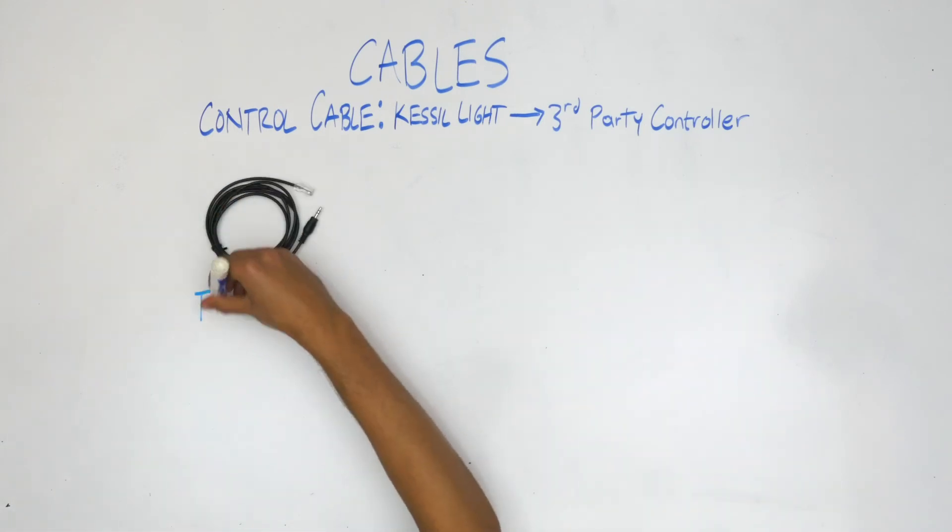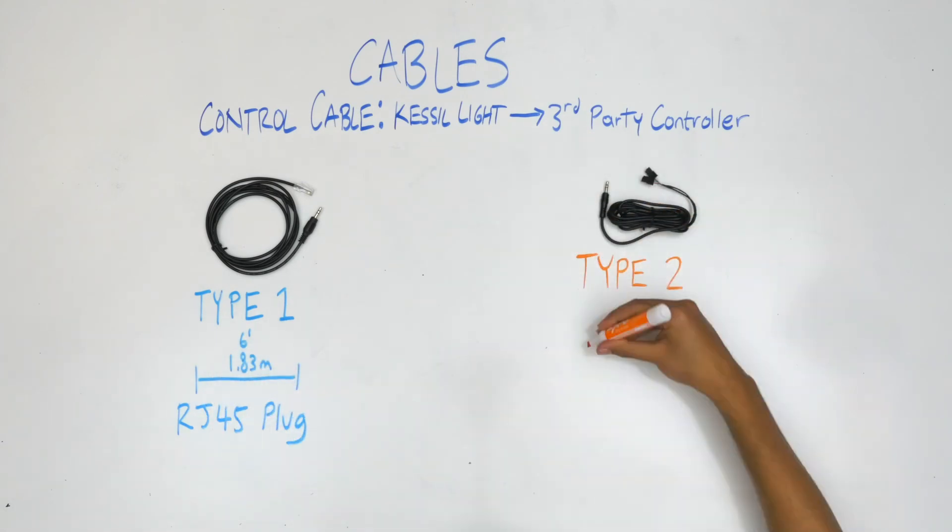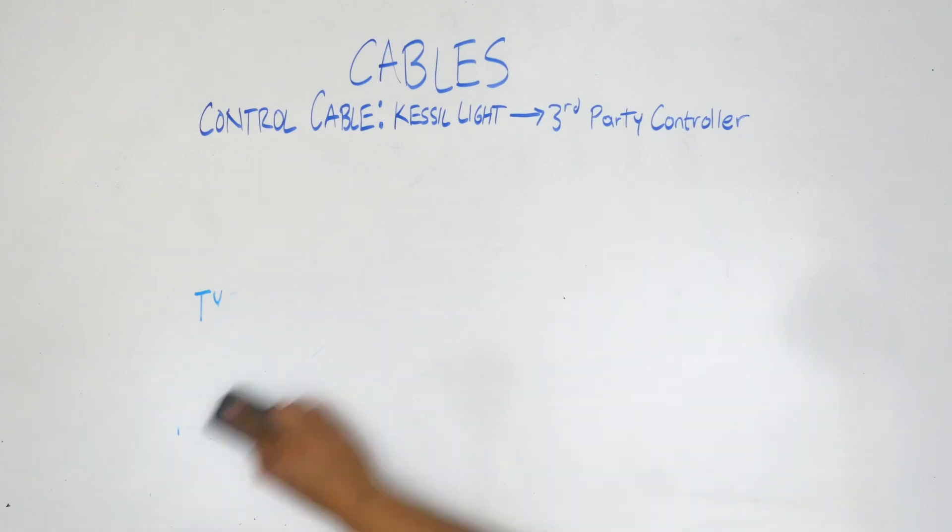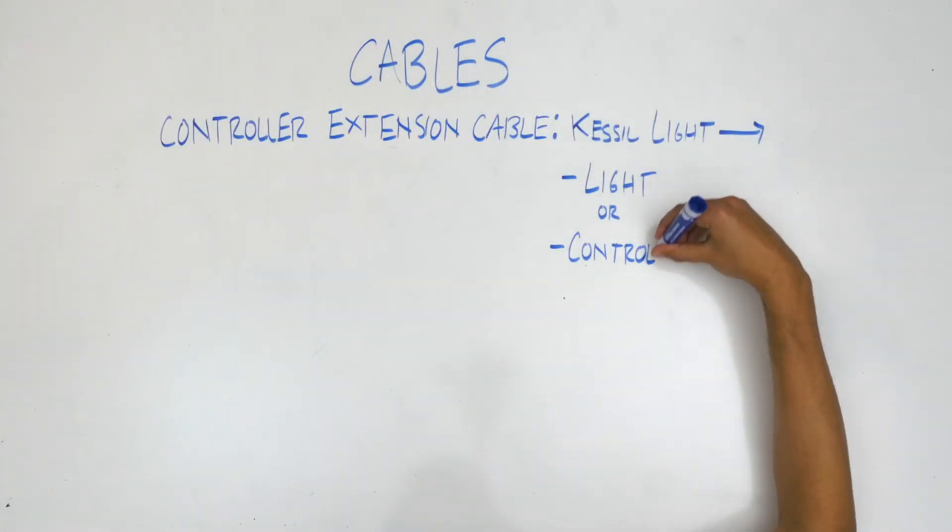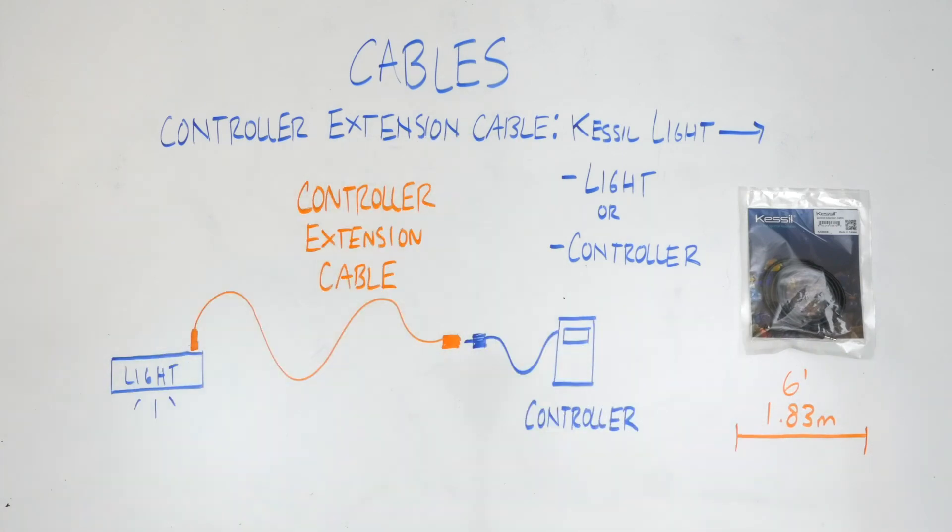The control extension cable, also 6 feet long, is an extender cable for either between lights or between controller and light.